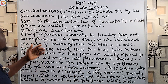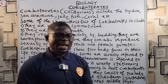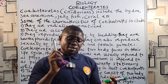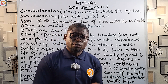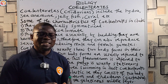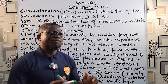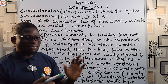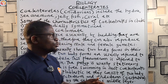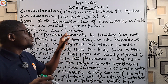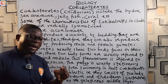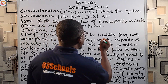They are also acoelomate. Based on the position of the coelom cavity, the animal kingdom is divided into three groups: the acoelomates, the pseudocoelomates, and the coelomates. Coelenterates are acoelomate — they have no true body cavity. Pseudocoelomates have a false body cavity, while coelomates have a true body cavity.